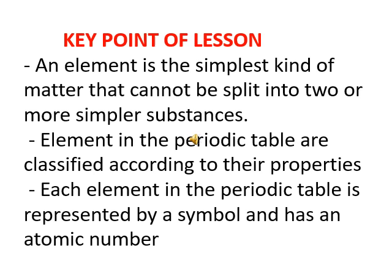The simplest kind of matter is an element, and we cannot split that element into two or more simpler substances. Elements in the periodic table are arranged according to their properties. Every element in the periodic table has a specific symbol and an atomic number.